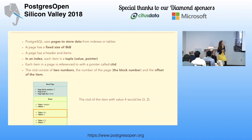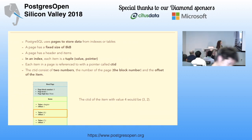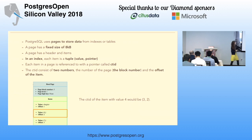Pages: PostgreSQL stores data in pages of a fixed size of eight kilobytes. In an index, the items in a page are tuples of the value and the pointer. Each item in a page is referenced with a CTID. This CTID is composed of two numbers: the first is the page block number, and the second is the offset. For example, this is the root page of one of the indexes — the page block number is three, and this item's CTID is three, two.